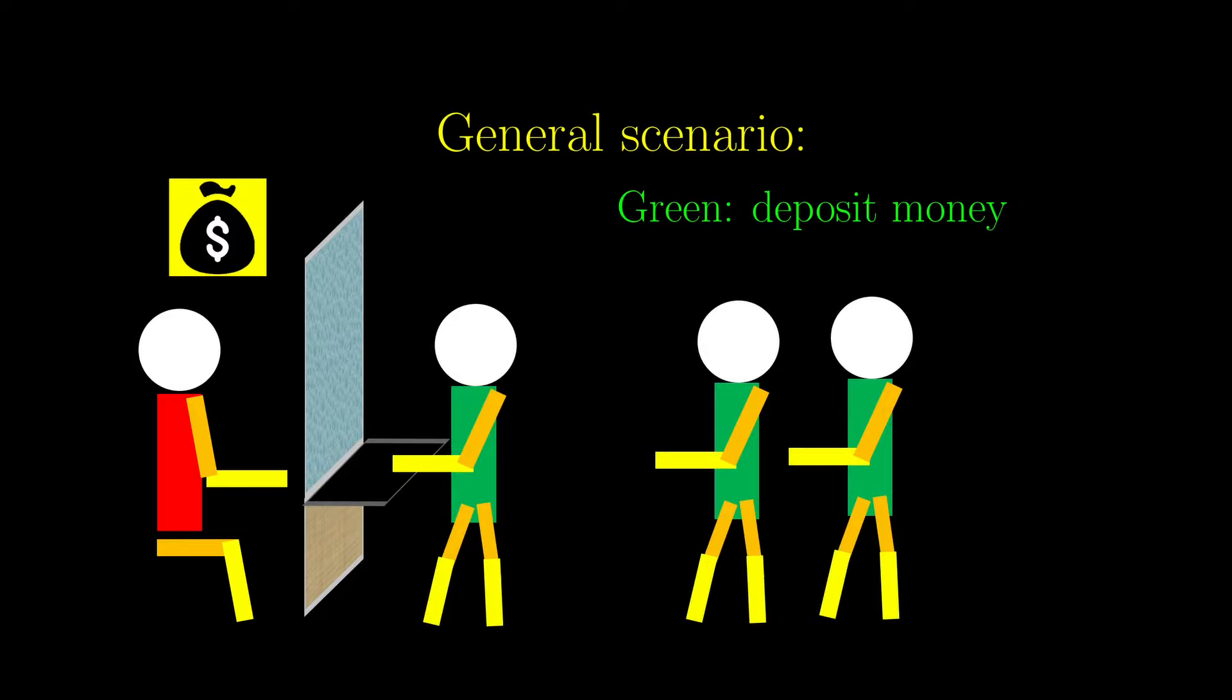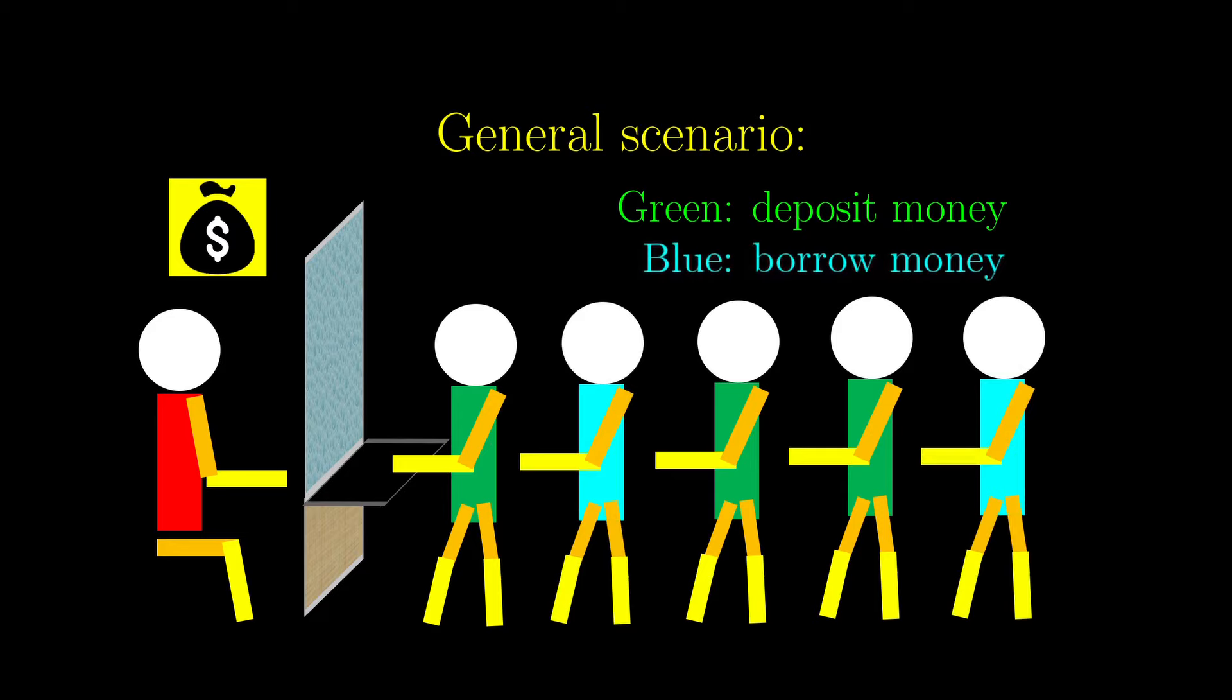The entire video series builds on one very general scenario. Let's say we are at a bank, and people are queuing up, either to deposit money, denoted in green, or to borrow money, denoted in blue.